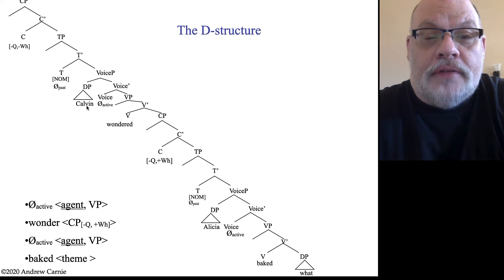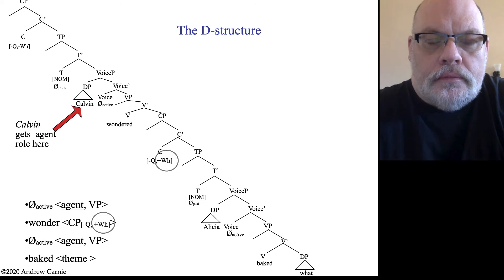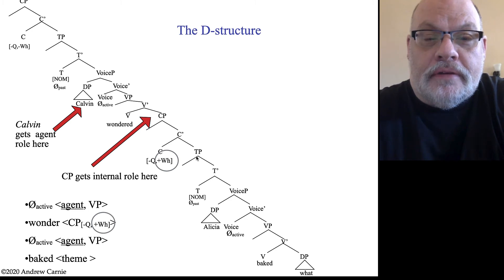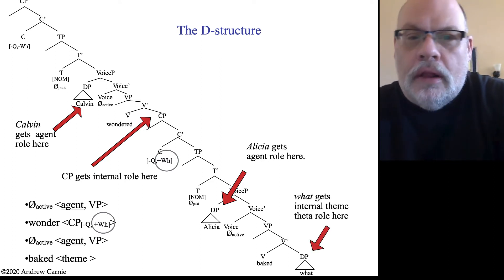The other thing we have is on the upstairs clause, we have an active verb phrase, which requires an agent DP, which is right here. And downstairs, we have the same thing. We have an active voice phrase that requires a DP. This is the agent of bake. Bake requires a theme. So here's our theme down here in its usual position. So Calvin gets its agent role in that voice P. The wonder requires a plus WH, which is going to be critical for us to do the WH movement. So the CP of wonder gets assigned to this, the proposition role, if you like, gets assigned to this position. The Alicia gets its theta role in the specifier of the voice phrase and what gets its internal theme theta role as the complement to the verb.